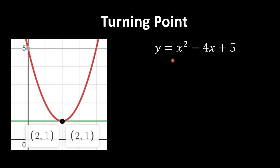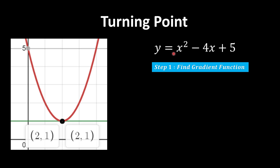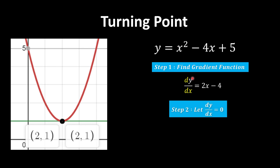Let's find the turning point using a mathematical approach. The first step is to find the gradient function — we want to prove that at one particular point the gradient is 0. Taking the derivative gives us 2x minus 4. Since we want the turning point, we set dy/dx = 0 and solve for x.